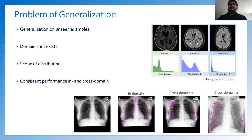If the unseen data has a different distribution, that is, domain shift exists, the problem is significantly more difficult. As shown on the top, you can see that just acquiring MRI data with three different scanners results in completely different data distributions.